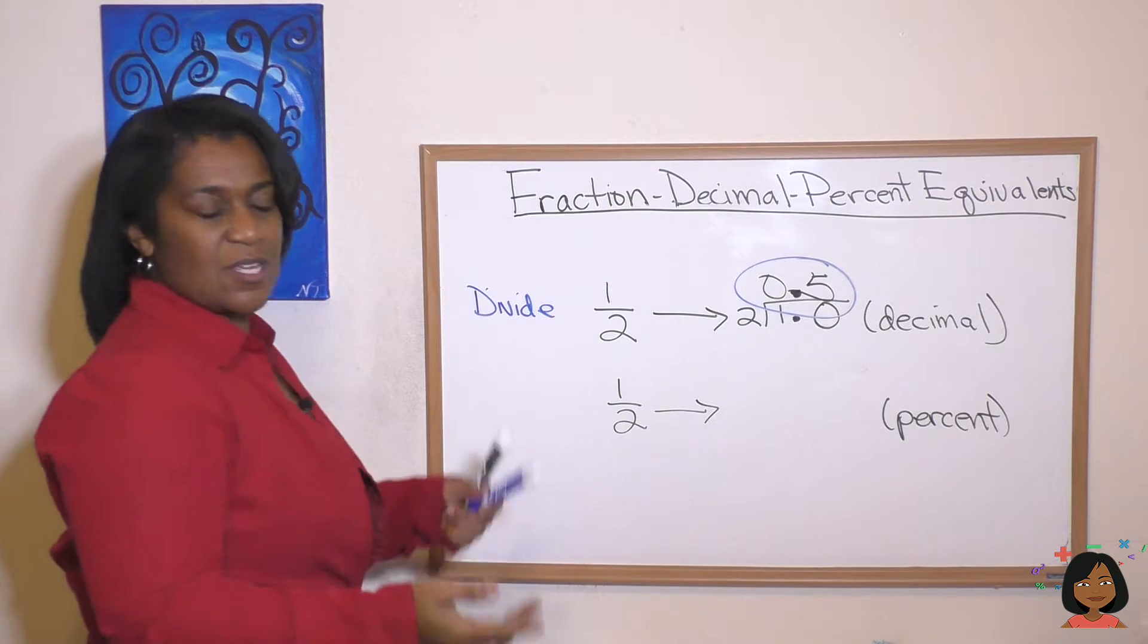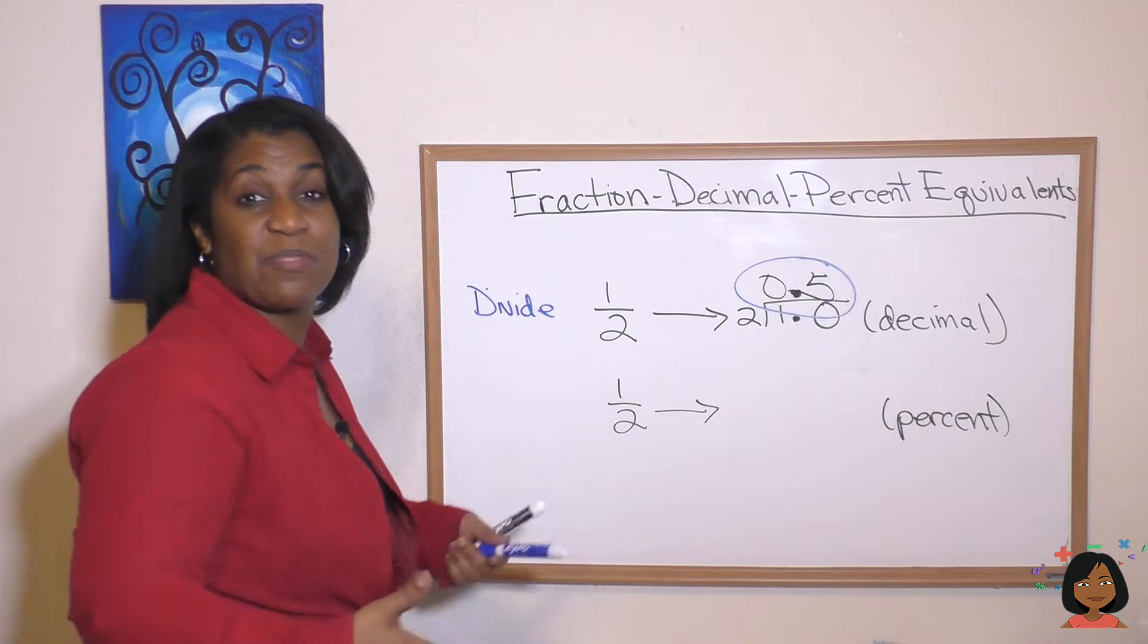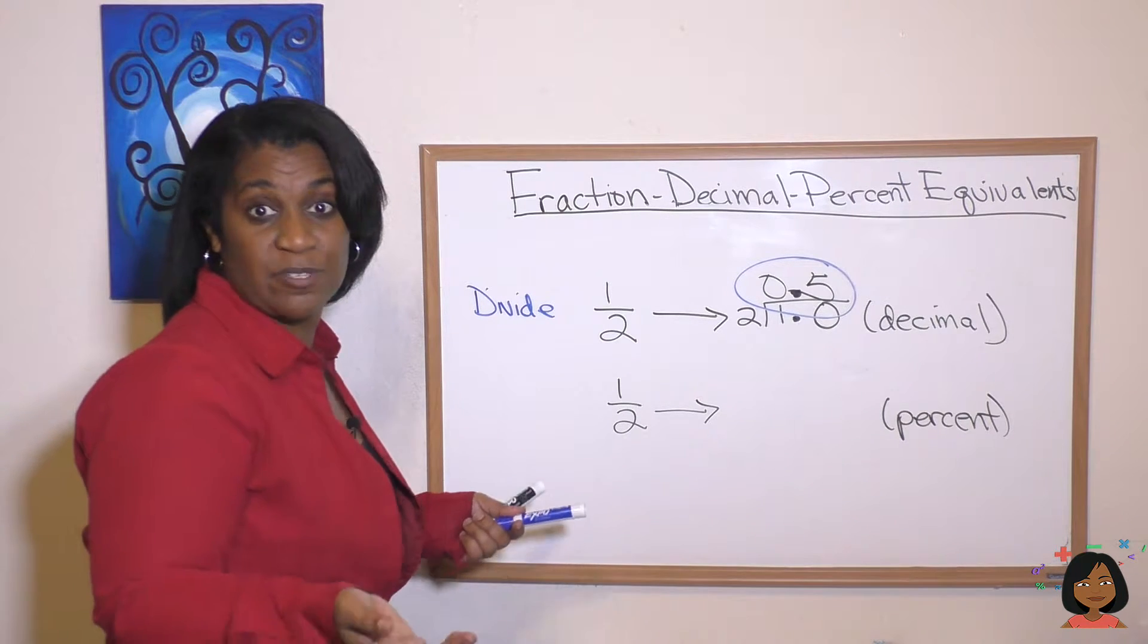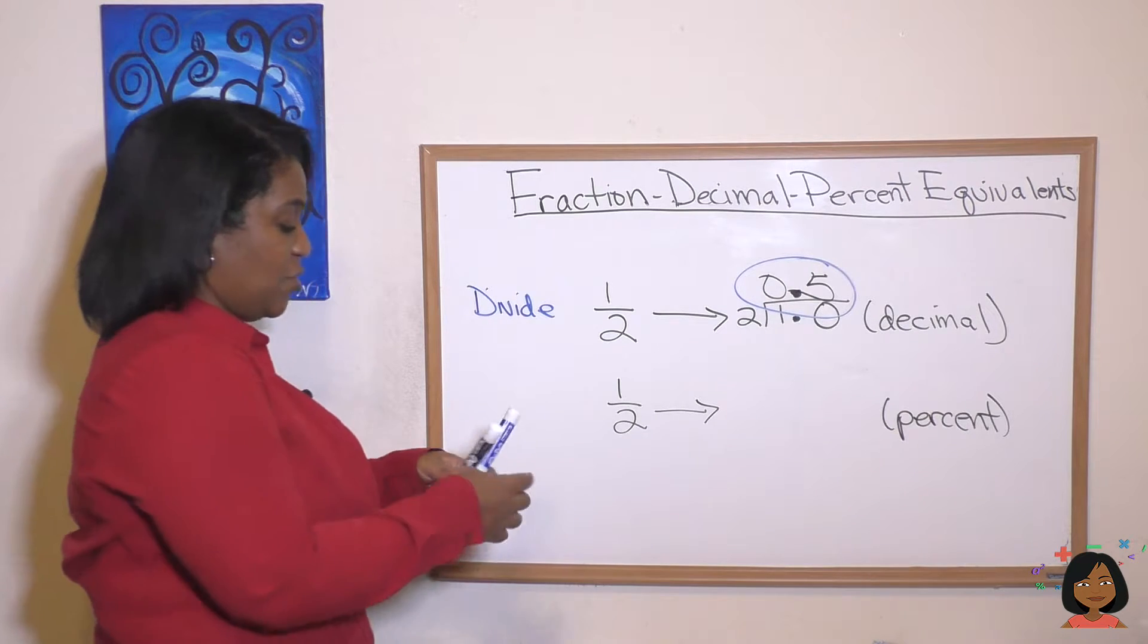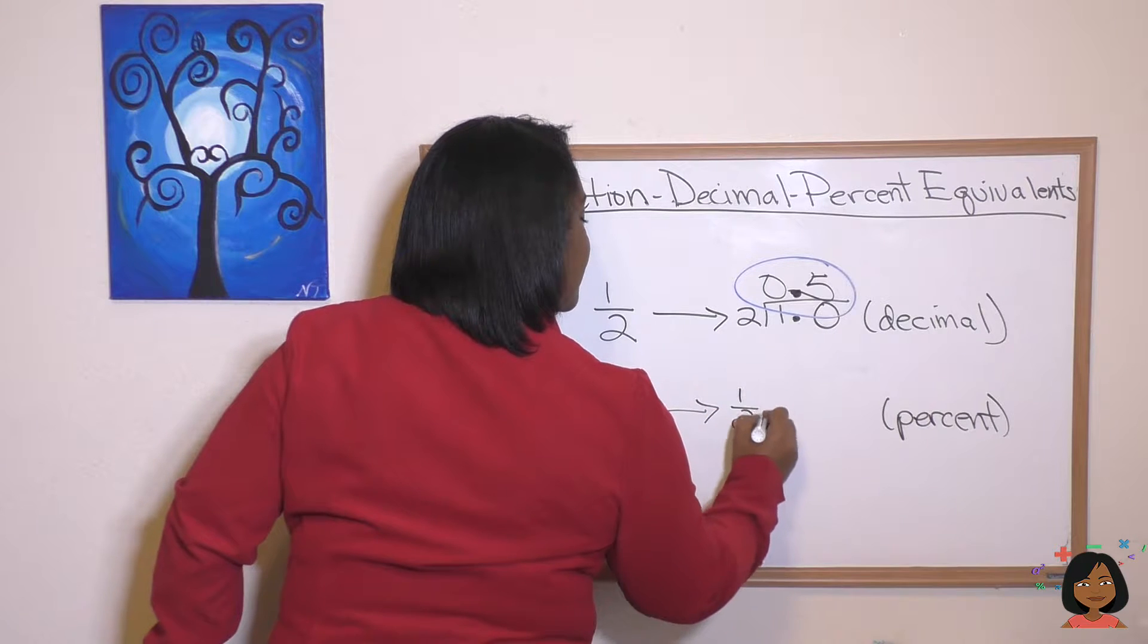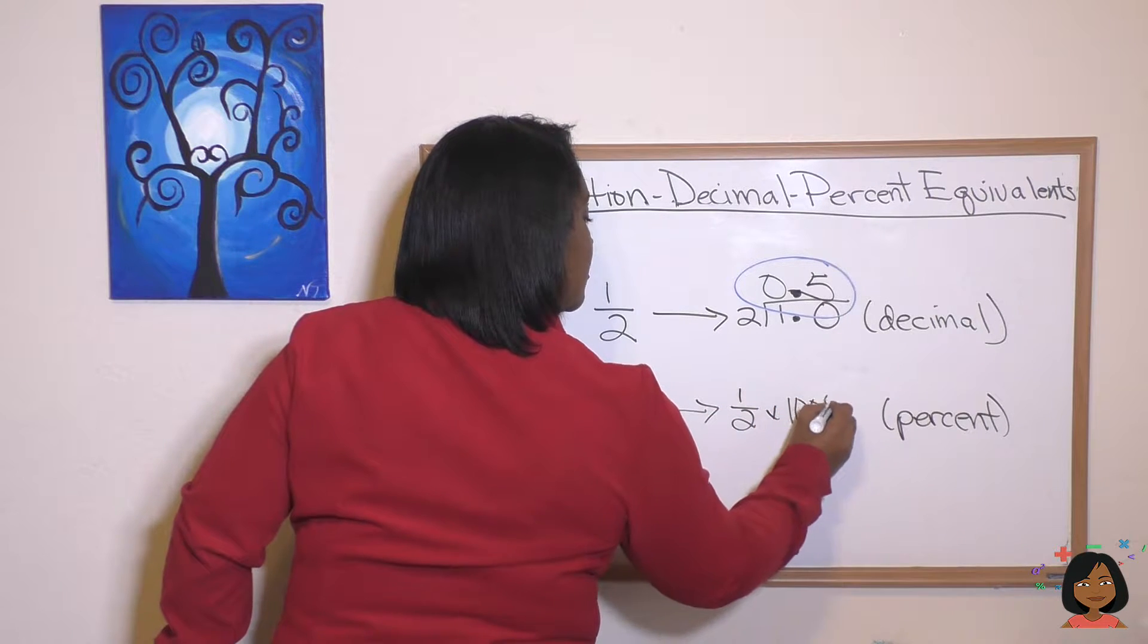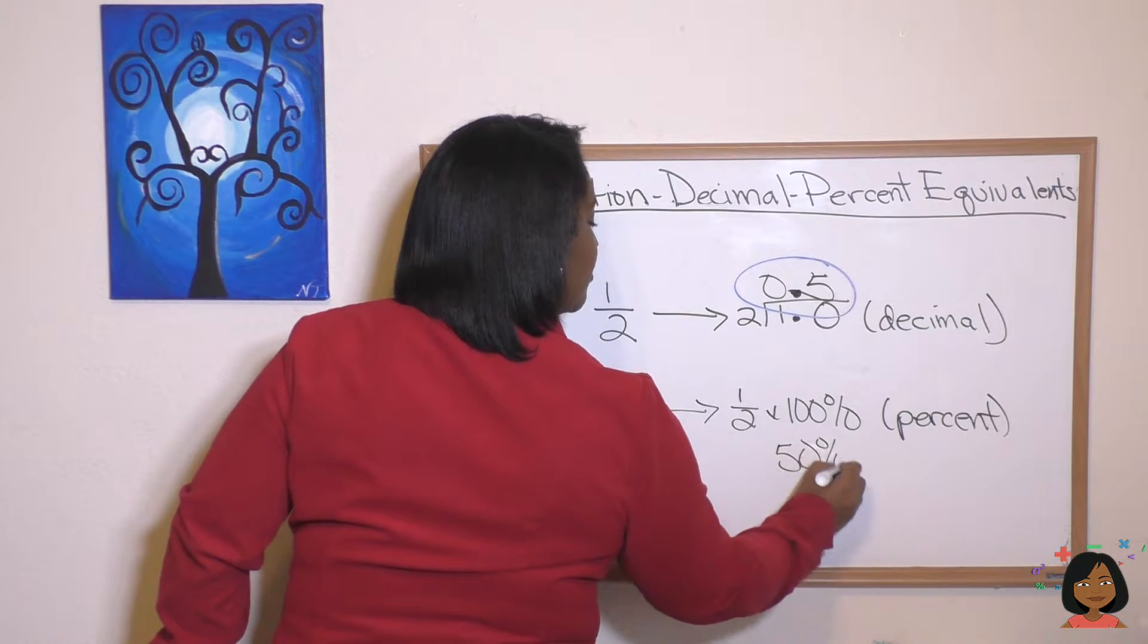Okay there's that answer. Now what about percent? To go from one half to a percent. Well think about it. A percent means something out of 100 percent. So we're gonna multiply our fraction times a hundred. Let's do it. One half times 100 percent is the same thing as saying 50 percent.